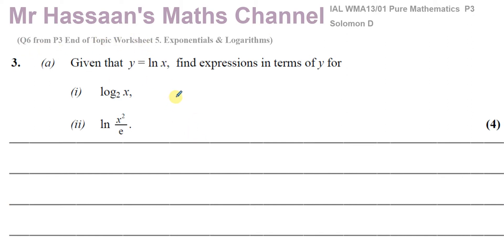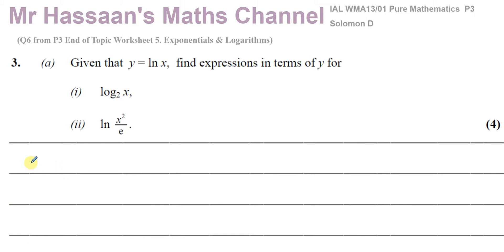This is a question where we have to, first of all, we're told that given y equals ln(x), find expressions in terms of y for log to the base 2 of x. So I've got to change this and write it in terms of y. I know y equals ln(x), so if I make these in terms of ln(x), I can then replace ln(x) with y. So I've got to change log base 2 of x in terms of ln(x).